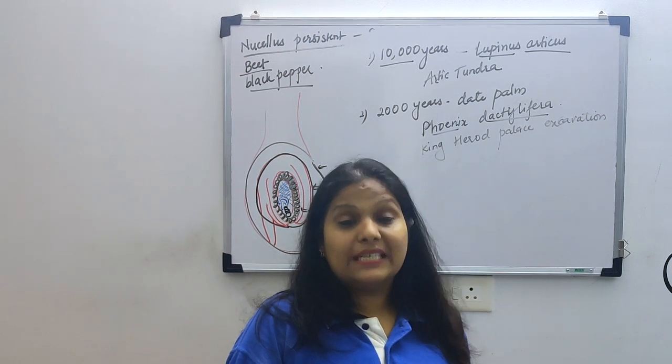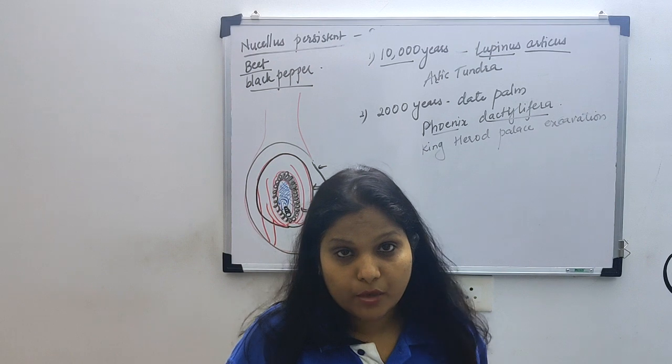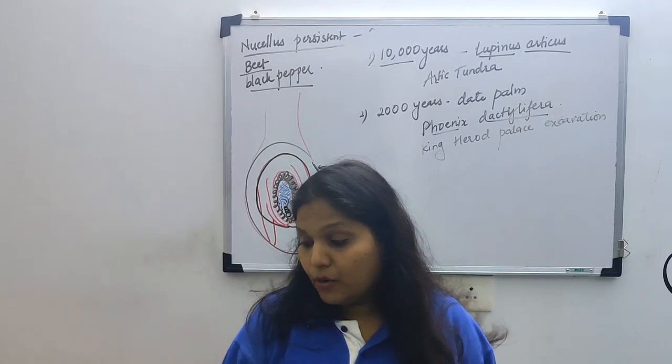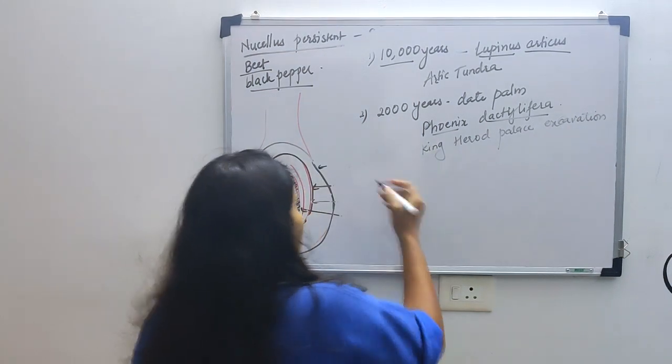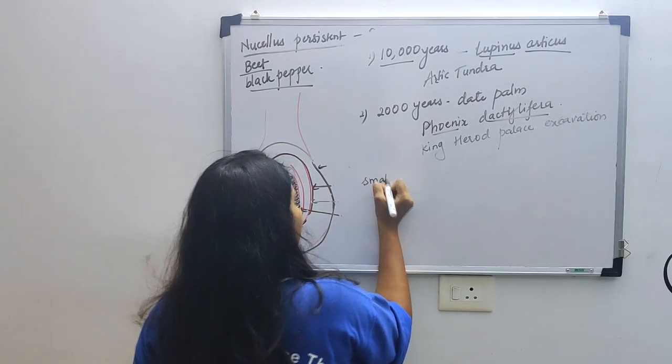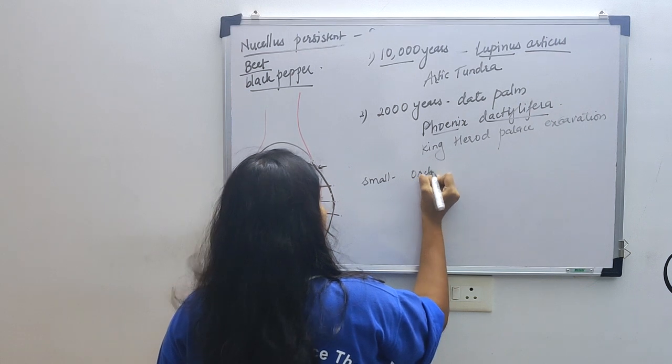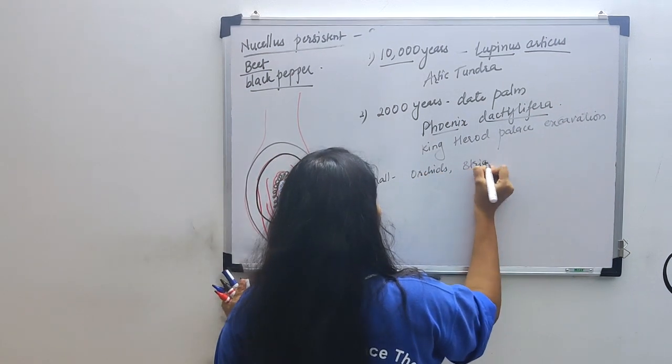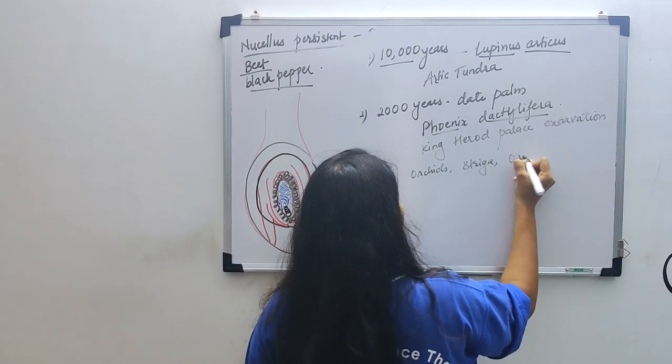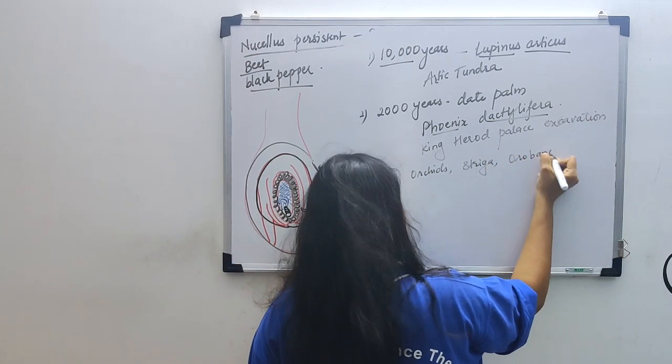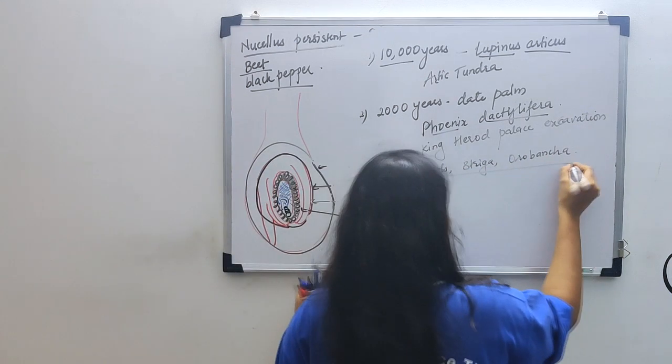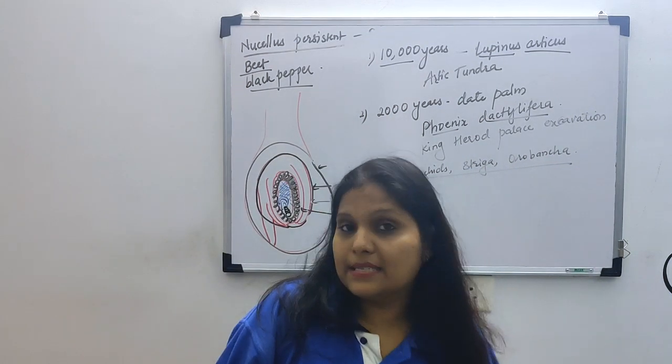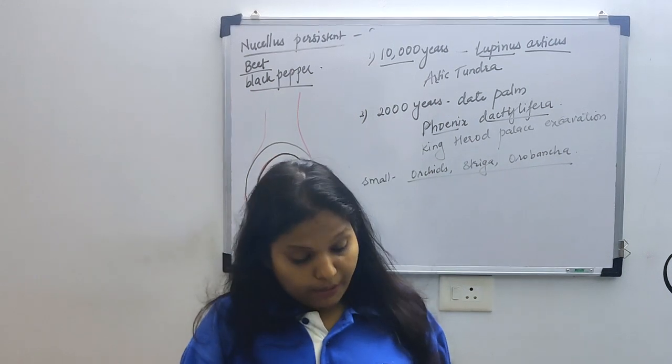So small size of seed - examples are orchid. Then there is an example of Striga and Orobanche. So small seed examples are orchids, Striga, and Orobanche. Remember these words guys, because these are the words given in your textbook and they may be asked in your exams. So seed dormancy is very important.